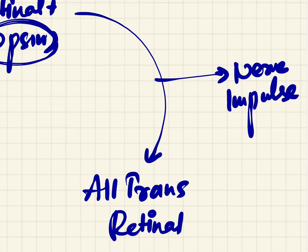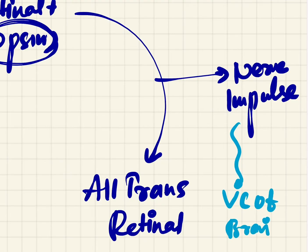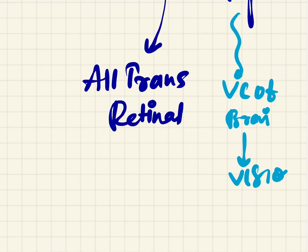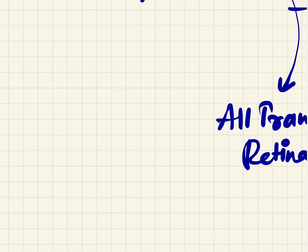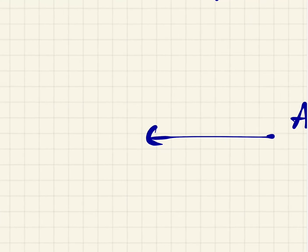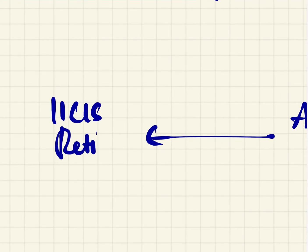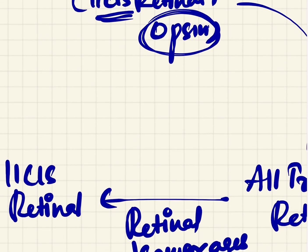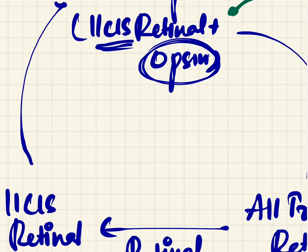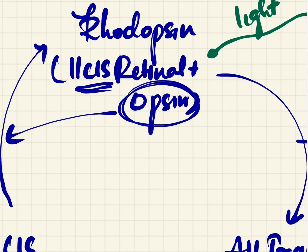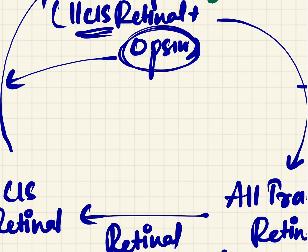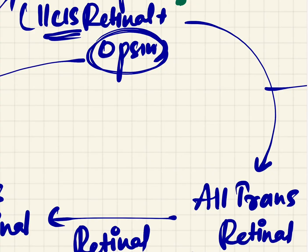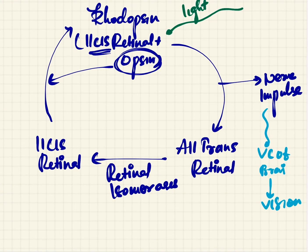The nerve impulse stimulates the visual cortex of the brain, causing vision. Immediately after converting into all-trans retinal, it is converted back into lewincis retinal by retinal isomerases. This lewincis retinal again combines with opsin and forms rhodopsin back, and the rhodopsin is resynthesized for another cycle of vision.